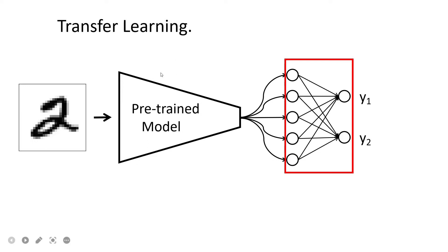For image tasks, pre-trained models like ResNet or VGG are common. PyTorch and TensorFlow provide these already pre-trained. What you need to do is remove the last layer — the one trained on a different dataset — and keep the rest. This entire pre-trained model has been trained on a large, diverse dataset and has the ability to extract very good features.